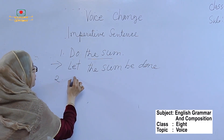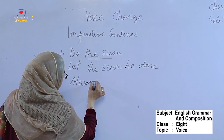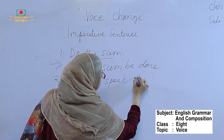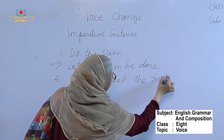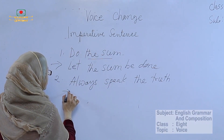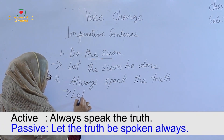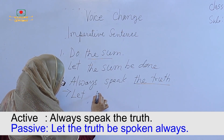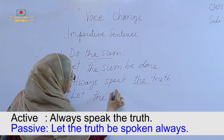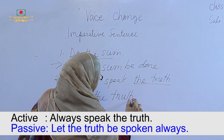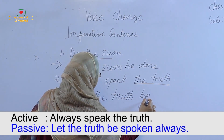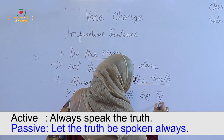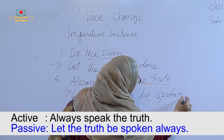The second one: 'Always speak the truth' — this is also an imperative sentence. Here we also use 'let'. The object of the sentence, 'the truth', will become the subject. We use 'be spoken': let the truth be always spoken.